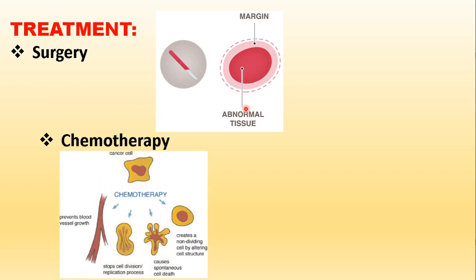Another method is chemotherapy. Cancerous cells are killed by several chemotherapeutic drugs — medicines given orally or injected into the body. Chemotherapy can work by preventing blood vessel growth, stopping cell division and replication, causing spontaneous cell death, or creating a non-dividing cell by altering the cell structure. Different principles can be applied depending on the medicine used, though chemotherapy has a lot of side effects.